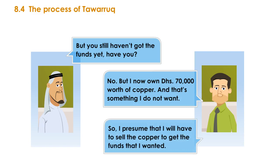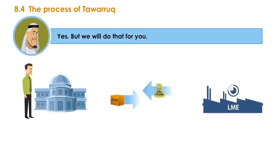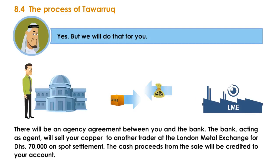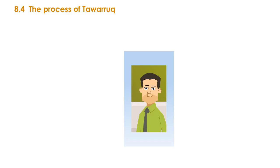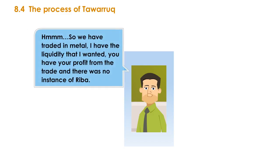Ayub: 'I presume I'll have to sell the copper to get the funds I wanted.' Mr. Omar: 'Yes, but we will do that for you. There will be an agency agreement between you and the bank. The bank, acting as your agent, will sell your copper to another trader at the London Metal Exchange for 70,000 dirhams on spot settlement. The cash proceeds from the sale will be credited to your account.' Ayub: 'So we have traded in metal, I have the liquidity I wanted, you have your profit from the trade, and there was no instance of riba.'